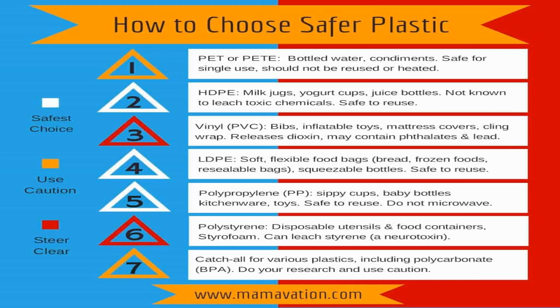Looking at this figure you can find how to choose safer plastic. Plastic contains a number at the bottom of each item indicating how safe the plastic is. According to this number, there are three different color categories. White color means this is the safer type — plastic numbers two, four, and five. Orange numbers one and seven mean safe but with caution, so you have to take care when using these plastic numbers. Numbers three and six are red, meaning they are not safe to use. I already have a video in my channel explaining in detail what these plastic codes and numbers mean — I will put the link in the description.